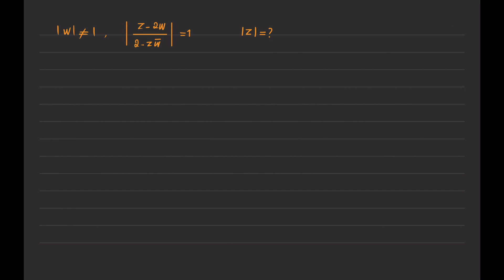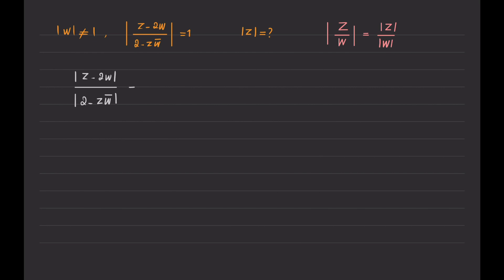The first thing we can do is to use this formula for the absolute value of complex numbers. If I have two complex numbers and I am interested in calculating the absolute value of a fraction, we can write the absolute value of the numerator divided by the absolute value of the denominator. So this becomes absolute value of z minus 2w over absolute value of 2 minus zw bar, and this is supposed to be equal to 1. Since this fraction equals 1, the numerator must equal the denominator.